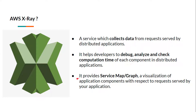AWS X-Ray service provides a service map or graph which is a visualization of all the application components. In the graph every component is considered as a node and we get a service map with respect to the request which is served by our application. So for every request we can get a service map using which we can easily identify, debug, analyze or check computation time of each component.